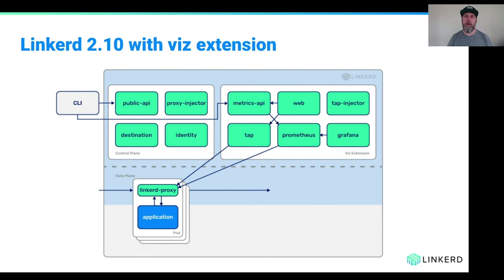Linkerd 2.10, which is the latest version, introduces the notion of extensions. If you want additional functionality, you can add these opt-in extensions. There's one called the Viz extension, which is a metrics pipeline. It includes things like Prometheus and Grafana and a web dashboard that take all of the metrics the proxies instrument and turn them into human-consumable outputs. If getting observability into your system without any config is important to you, you may install that extension. If not, or if you have another mechanism for that, then you don't have to install it.